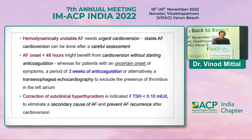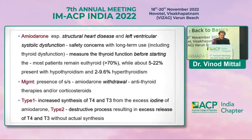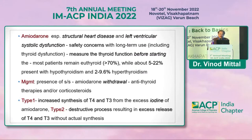Correction of hyperthyroidism is very important, with a target TSH of less than 0.10. Amiodarone is commonly given but should be reserved for structural heart disease or left ventricular systolic/diastolic dysfunction — not plain and simple AF.